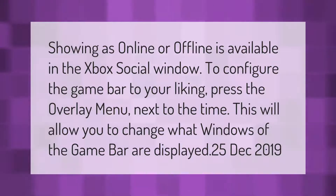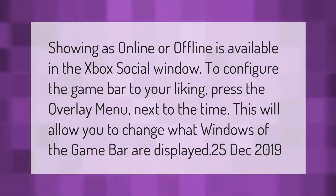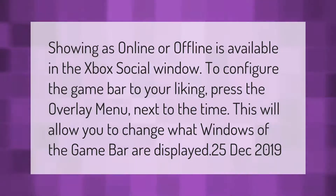Showing as online or offline is available in the Xbox social window. To configure the Game Bar to your liking, press the overlay menu next to the time. This will allow you to change what windows of the Game Bar are displayed.